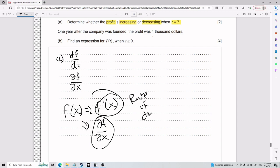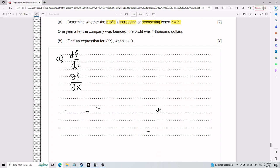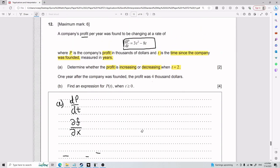And so when you plug in, say, x equals 5 in this scenario, you're saying what is my rate of change at x equals 5? So now that we understand that idea, if it asks is the profit increasing or decreasing when t equals 2, you got to take this dP/dt and plug in t equals 2.